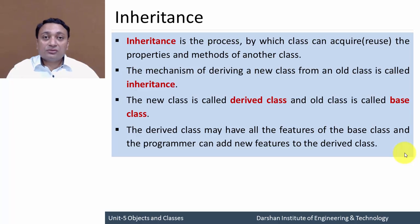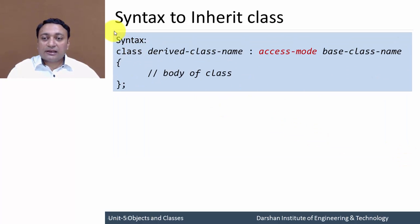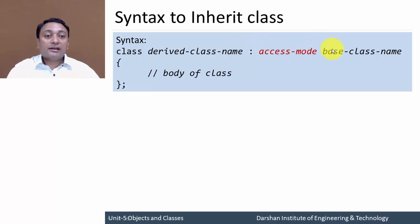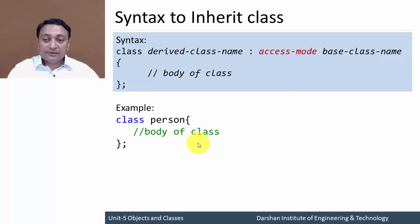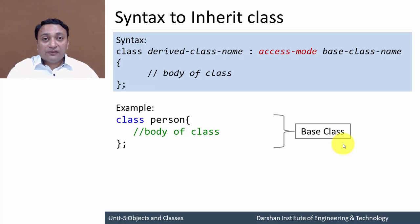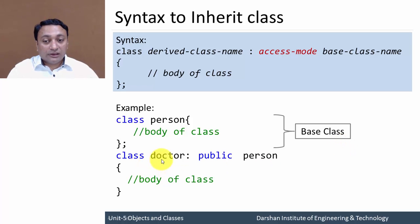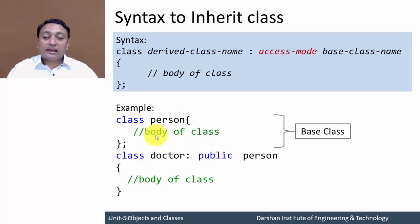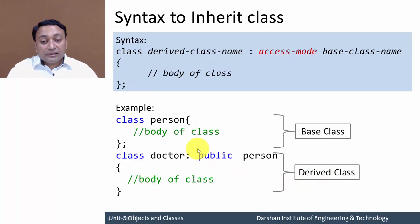Now let us understand how to implement this concept in a C++ program. The syntax is: write the keyword class, then your class name, followed by a colon, the access mode, and the base class name, then the body of the class. For example, class Doctor is derived from class Person by writing a colon, then the access mode, then Person. Here Doctor is the derived class acquiring properties from class Person.